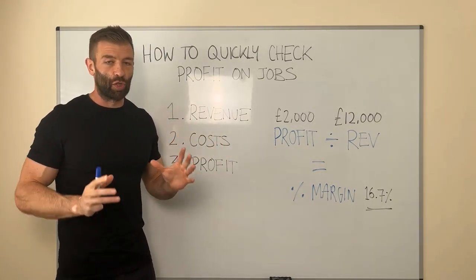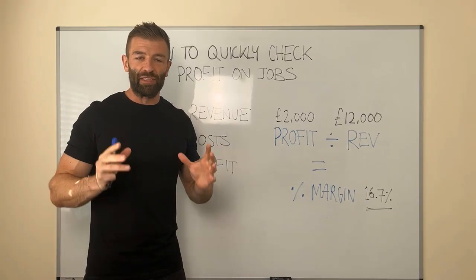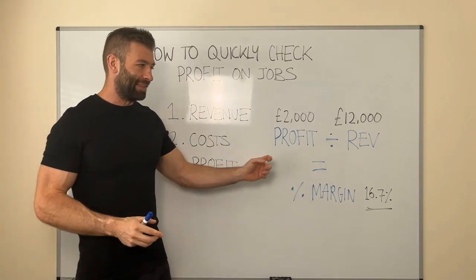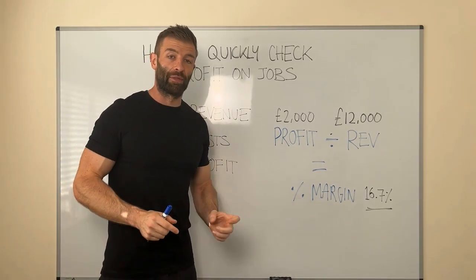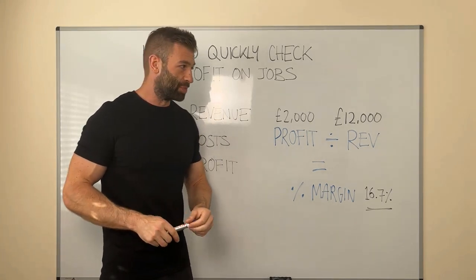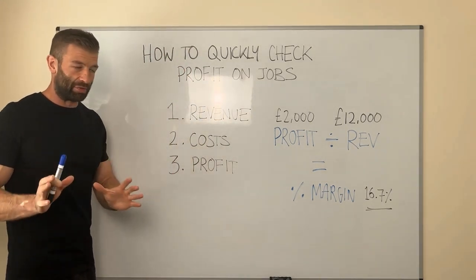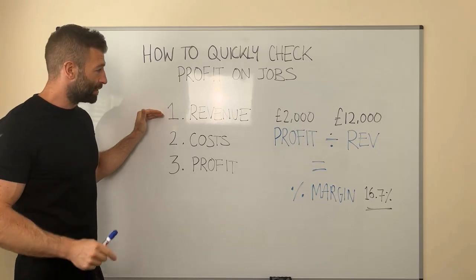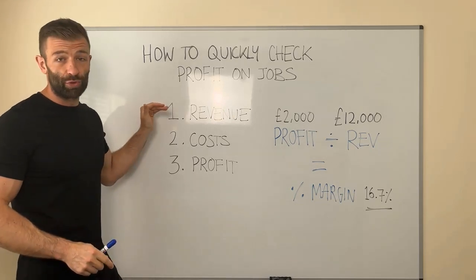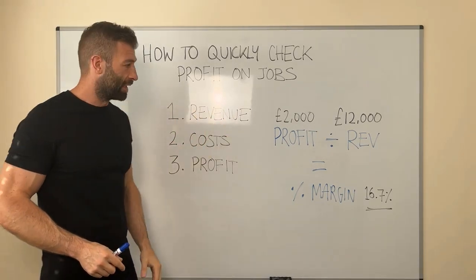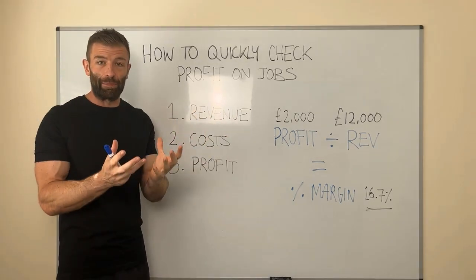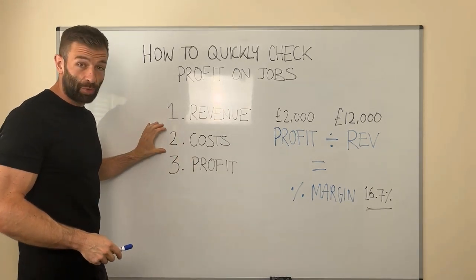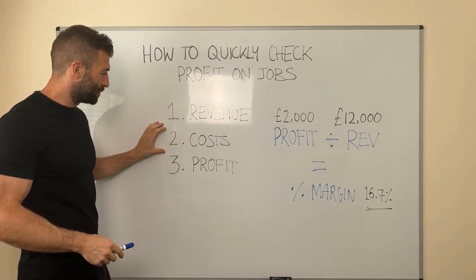This is quite easy — you don't need to be a genius, you just need to know the basics of this formula to work out accurate margins once you finish the job. To quickly do it, you need to know three things: the basic stuff of what the customer has paid you excluding VAT — your revenue or sales figure — and what the job cost you, so you've got to track the job costs.